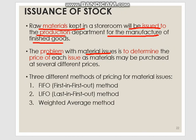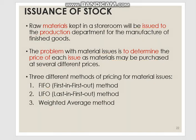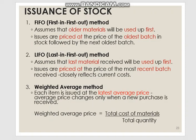One problem is how to determine the material issue prices. We have several different prices because we purchase at different times — maybe the earliest purchase is one ringgit, the second is two ringgit, and the third is three ringgit. Basically, we have three methods: FIFO, LIFO, and weighted average method.